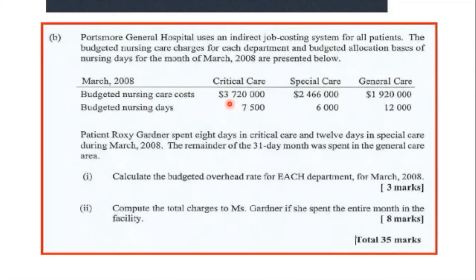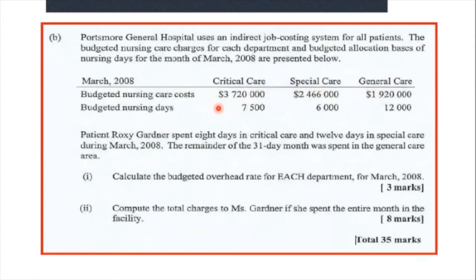The nursing care costs are: critical care $3,720,000; special care $2,466,000; general care $1,920,000 — along with the number of patient days for each. Patient Roxy Gardner spent 8 days in critical care and 12 days in special care during March 2008. The remainder of the 31-day month — 11 days — was spent in the general care area, so she used all three departments. We will now calculate the budgeted overhead rate for each department.